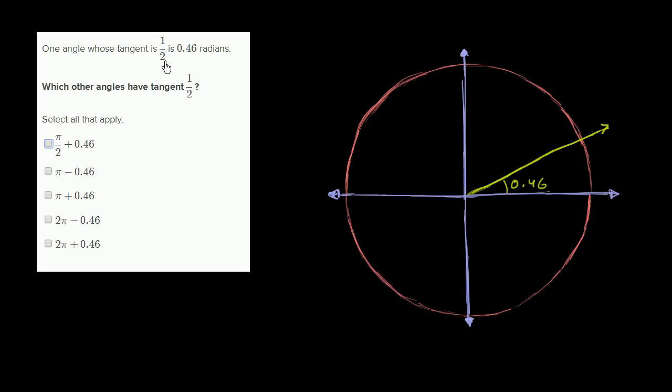One angle whose tangent is half is 0.46 radians. So we're saying that the tangent of 0.46 radians is equal to half.